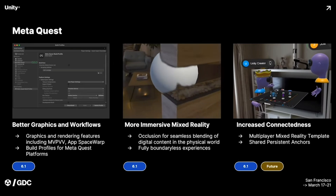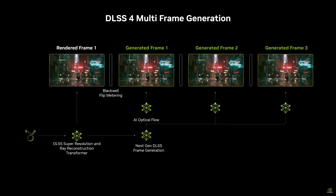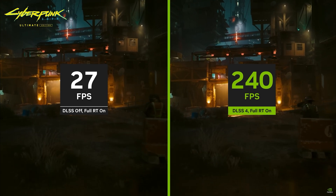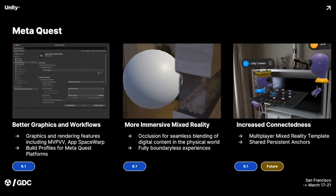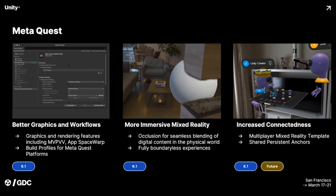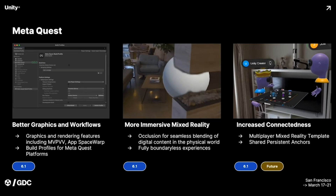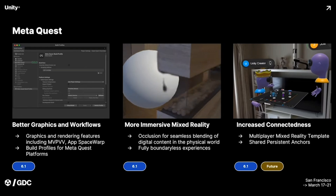Graphics-wise for Meta Quest, we're getting MVPVV and also App Space Warp. App Space Warp is a technique used for the Meta Quest that enables higher performance for VR applications — kind of like Nvidia's DLSS, where you're doing lower rendering resolution and frame rates and then upscaling and interpolating. Essentially you render down to around 36 FPS, interpolate to generate new frames in between, and boost back up to 72 FPS. With Space Warp and per-pass foveation, you can get something like a 45% increase in performance. Even better, Space Warp is now compatible with custom shaders.